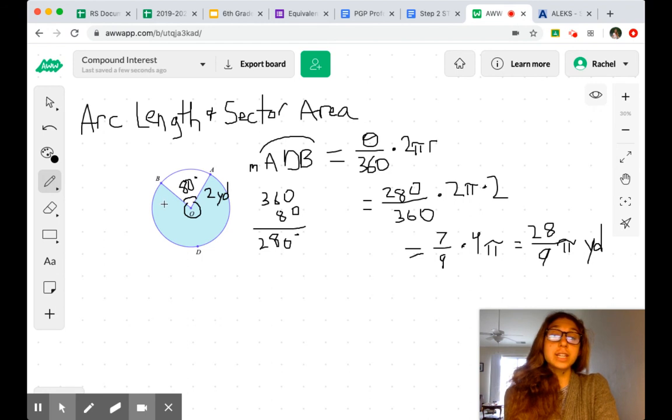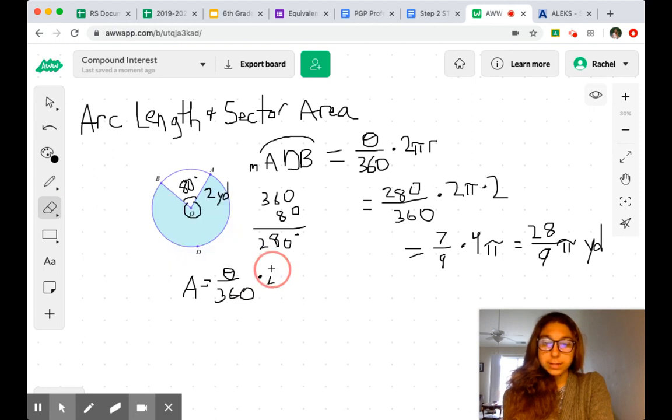Now, the shaded sector. Remember the formula for the area of a sector looks very similar. We're still doing our angle θ divided by 360. But this time, we have to multiply by the area of the circle. Oh my gosh, not 2r. I was even thinking area, I said area, and I still almost wrote the formula for circumference. So πr².